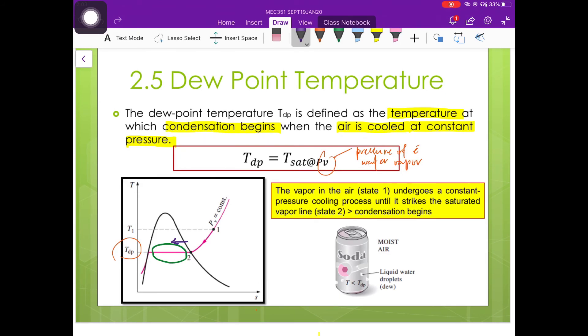That is why we always observe liquid water droplets formed on the surface of a cold drinks. Why is this happening? It is because the temperature of that cold drink is lower than the dew point temperature for the atmospheric air.